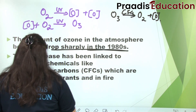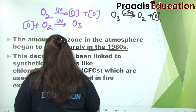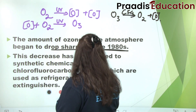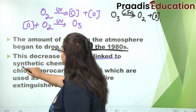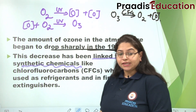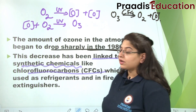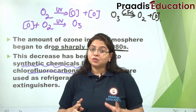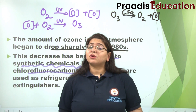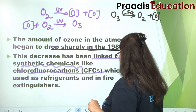1980s mein humne notice kiya ki hamaari atmosphere ke upar se ozone kaafi patli ho gayi hai. Phir humne pata lagaya ki synthetic chemicals — jaise ki chlorofluorocarbons — iska kaaran hain. In chlorofluorocarbons ko humne responsible paaya ki ye ozone depletion cause karte hain.